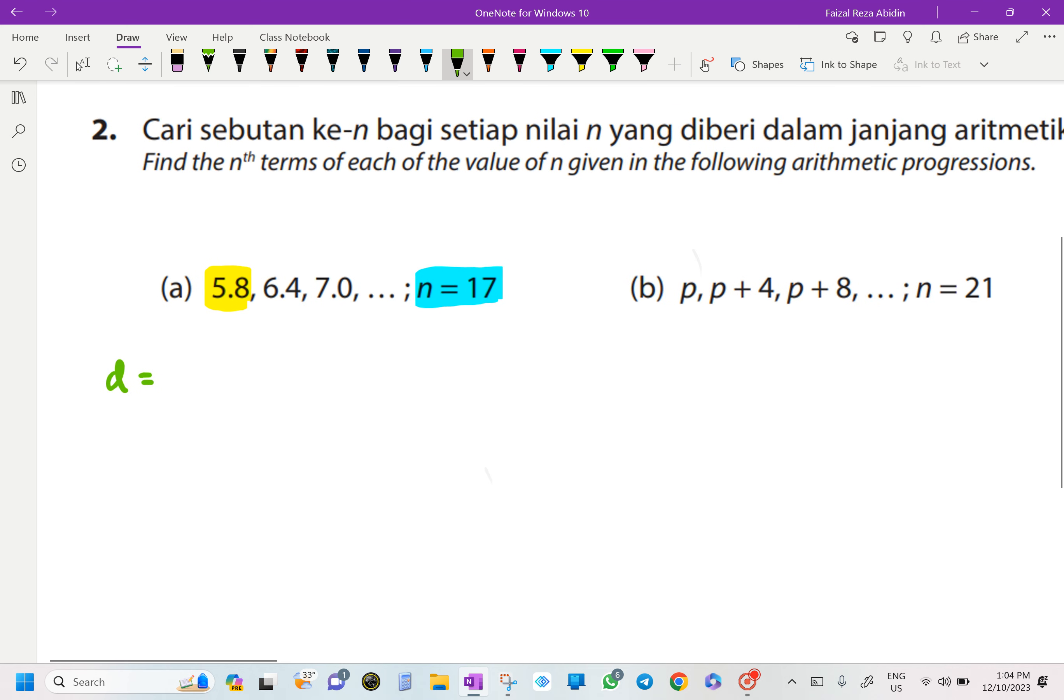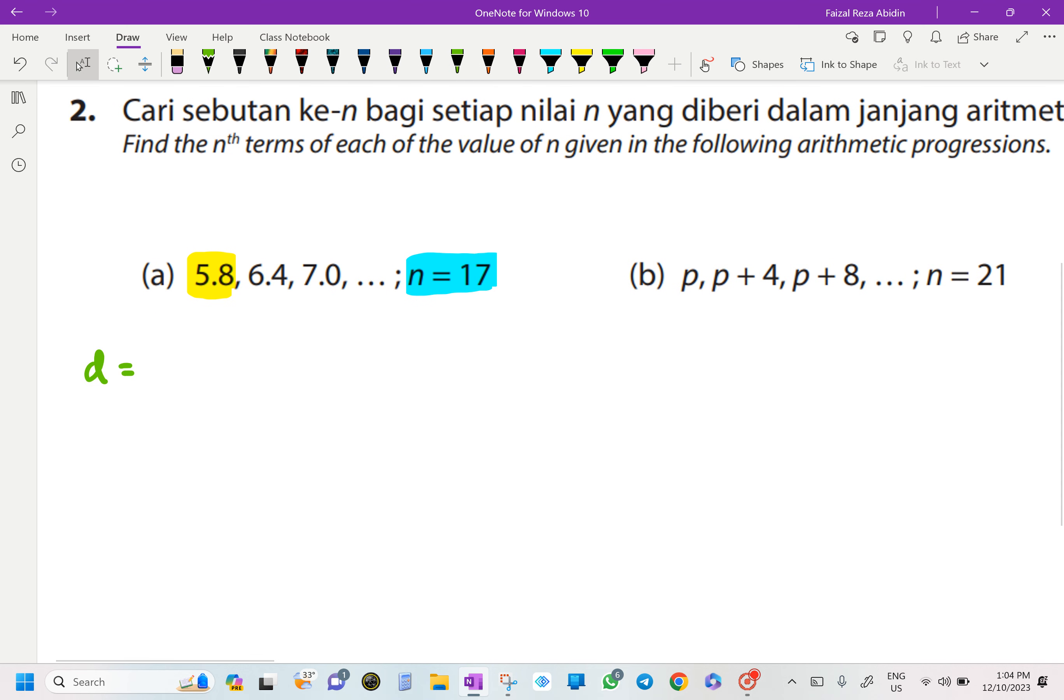Okay, so you have 3 of our sequences over here. I'm going to get the second term minus the first term, or you can take the third term minus the second term. It's up to you. It's going to be the same. So if I want to find it, I'm going to take the third term, 7.0 minus 6.4. I'm going to get 0.6.